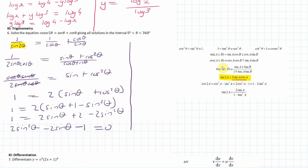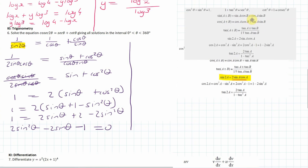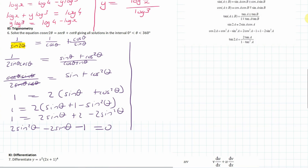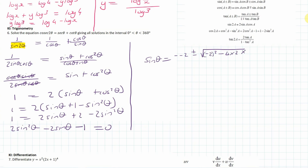This doesn't factorize, so I'll use the quadratic formula. Instead of x we have sin θ: sin θ equals minus b — that's minus minus 2 — plus or minus the square root of b squared minus 4ac, where a is 2, b is minus 2, and c is minus 1, all over 2 times 2. This gives sin θ equals 1.366 or negative 0.366.